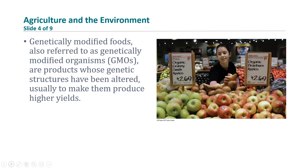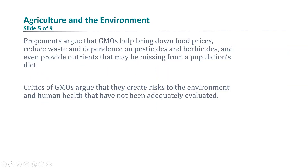Genetically modified foods, referred to as genetically modified organisms or GMOs, are products whose genetic structures have been altered, usually to make them produce higher yields. Proponents argue that GMOs help bring down food prices, reduce dependence on pesticides and herbicides, reduce waste, and can even provide vitamin and mineral contents that may be missing from a population's diet — all of which is particularly significant for developing countries. Critics of GMOs argue that this can create risks to the environment and human health that have not been adequately evaluated, and that genetically modifying foods is not natural and could lead to problems with the food chain, including antibiotic resistance. Currently, there are no laws against GMOs, and in most states foods that have been modified do not have to be labeled as such, so many people consume GMOs without even knowing it.